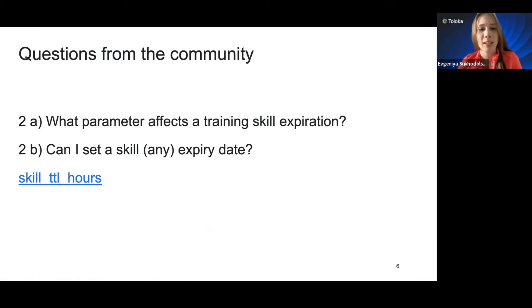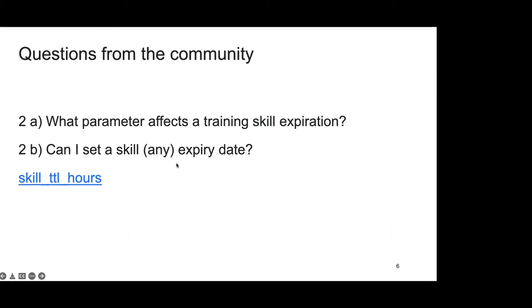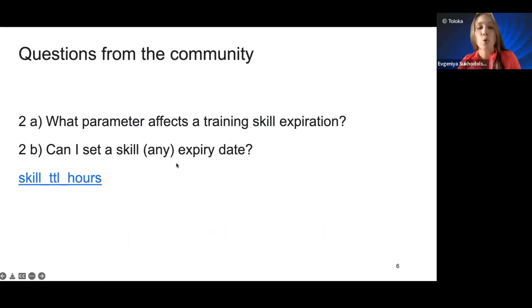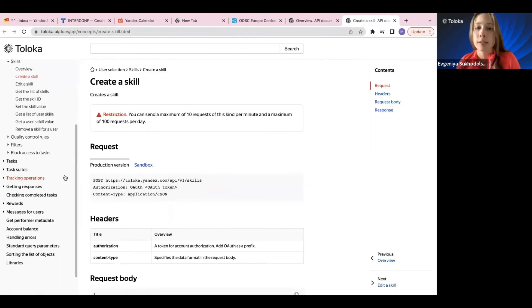Okay, so yes, we can but we can do it unfortunately only through API. So through desktop version, if you remember when we create a skill, you basically can say it's name, description, and is it public or not. But through API we also have this option which is skill TTL hours, which is a skill time to live hours, which you are setting to some amount of time.